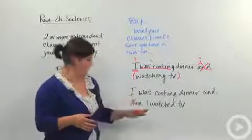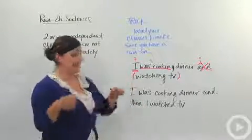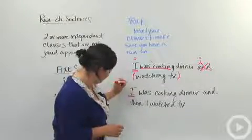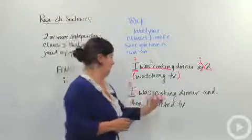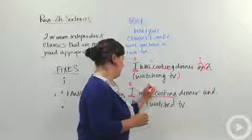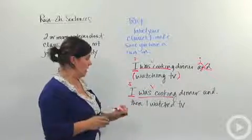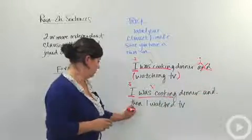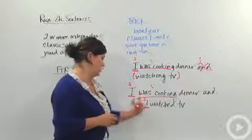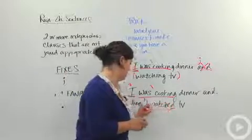Let's take a look at a different example. I was cooking dinner, and then I watched TV. Let's look for subjects. So we've got I there, and again, our verb is was cooking. And if we look after our conjunction, we've got another subject, I, and then another verb, watched.